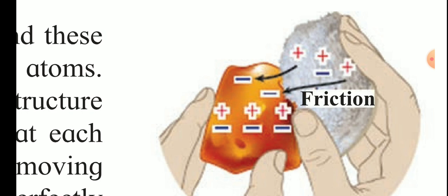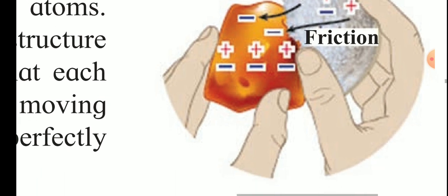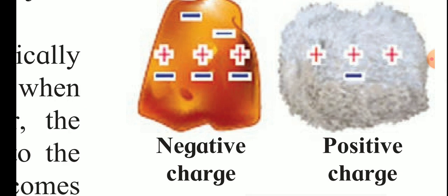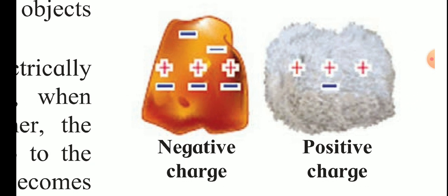After friction, the red object has five negative charges and three positive charges, while the gray object has three positive charges and one negative charge. So the red object has more negative charges — it is negatively charged. The gray object has more positive charges — it is positively charged. Whenever there is friction between two objects, electrons transfer from one object to another. The object that gains electrons becomes negatively charged and the object that loses electrons becomes positively charged.